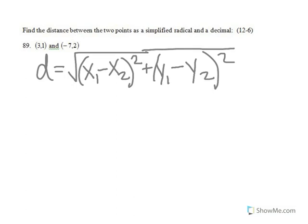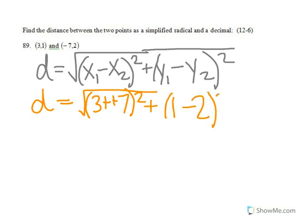By plugging in the points we have, distance equals the square root of 3 minus negative 7 squared, which turns out to be 3 plus 7 squared, plus 1 minus 2 squared.